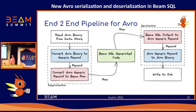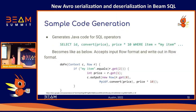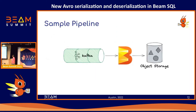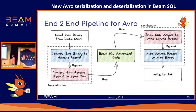In our case: binary Avro to GenericRecord, then GenericRecord in memory, then convert to Beam Row. The generated SQL code runs at this step. The Beam SQL generated code takes the Row as input. Do you see any issue with this pipeline? We wasted CPU cycles and memory doing conversions twice.